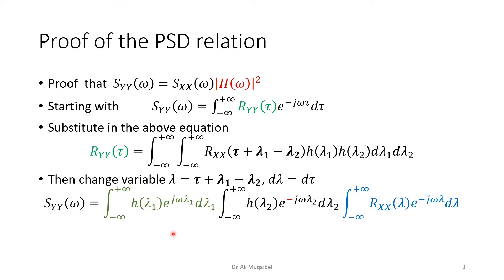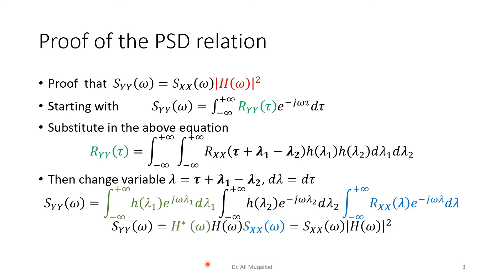Separating the variables — and coloring them for clarity — we identify three parts: one is the power spectral density of the input signal; another is the Fourier transform of the impulse response, which becomes the transfer function H; and the third is the conjugate of the transfer function due to the minus sign. Multiplying a complex quantity by its conjugate gives |H|². Combining all three parts yields |H(ω)|² · S_xx(ω), which is how we prove the relation.